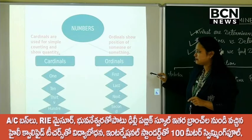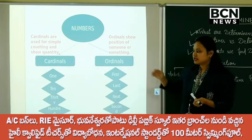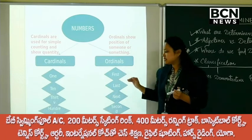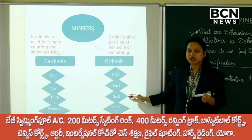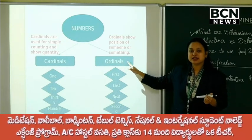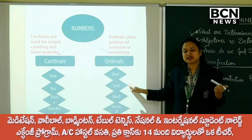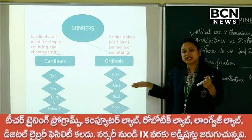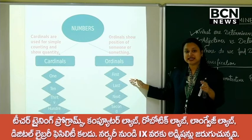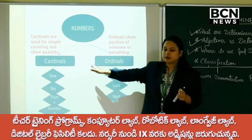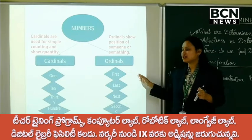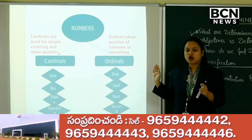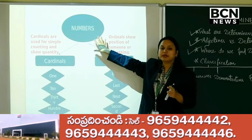Next, numbers. These are determiners like 1, 2 dogs — 1 dog, 10 dogs, 2 dogs, 30. These are all numbers. When I told you next week, those are ordinals. Next class, the boy sitting next to Reedhi — next, last, first, second — all these are ordinals. Numbers like 1, 2, 30 are cardinals. But next, last, first, second — which talk about position — these are ordinals. This is the numbers category, which has two types: cardinals and ordinals.